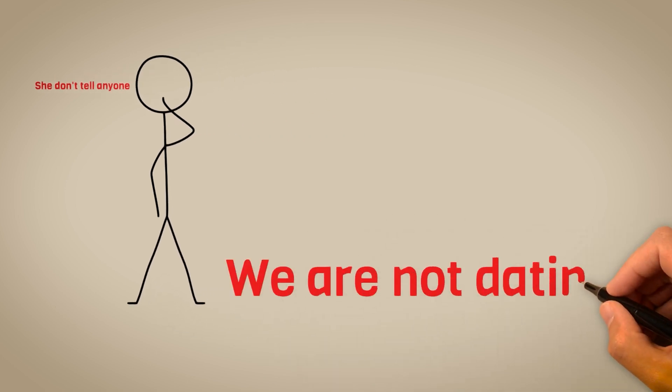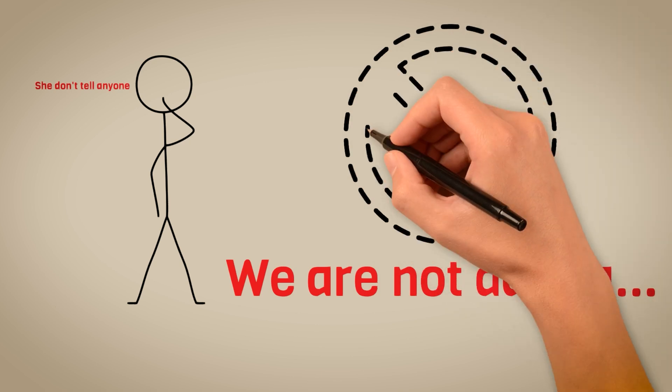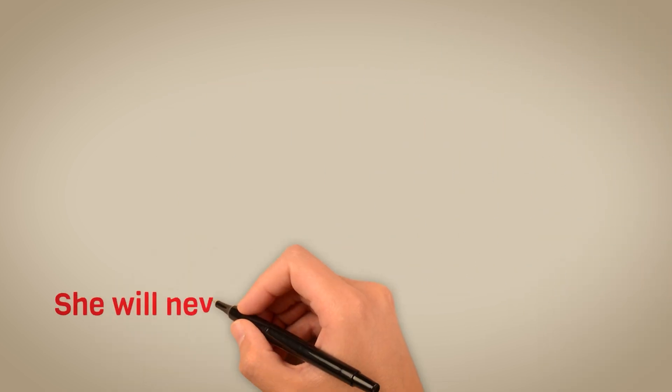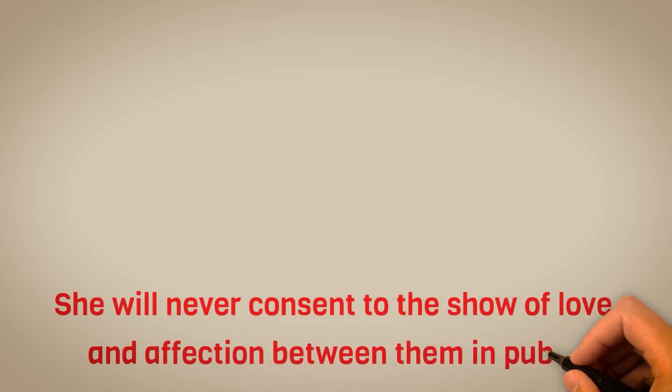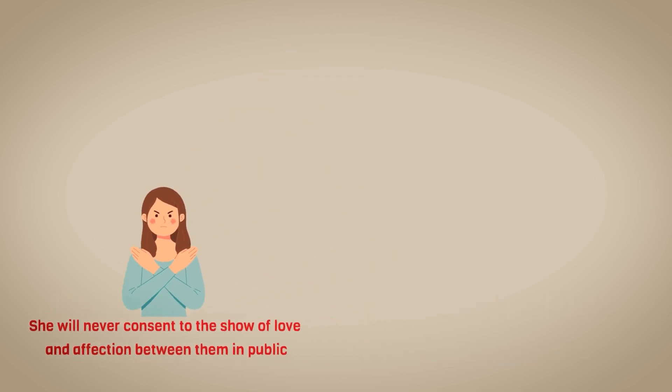She will give excuses and reasons why she can't date him, yet she is dating him in secret. She will never consent to the show of love and affection between them in public. This simply implies and shows that she either does not care about him or the relationship enough.